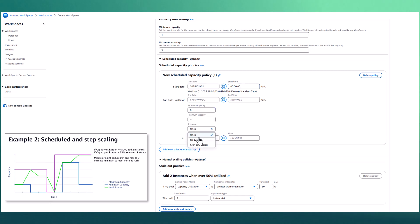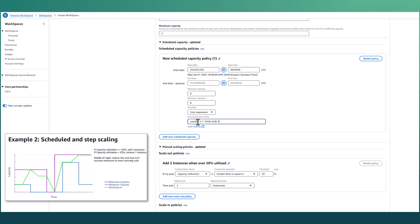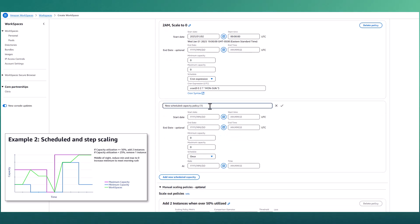I'm going to type out a cron expression here that will set up this policy to run every day at 2 AM, no matter the day of the week, at which time it will set the new minimum and maximum capacity values. This will essentially scale the pool to zero, forcing a reboot of all the instances, ensuring that they're all in the latest image every night. Again, we're going to rename this for clarity and then select the checkbox to save that updated name.